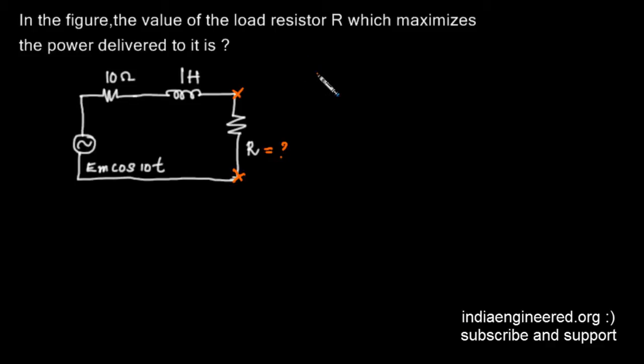First, we will see the conditions for maximum power transfer. Say we have a Thevenin impedance of a circuit with resistive part RTH and reactive part XTH, and we need to transfer maximum power to a load which is RL + jXL.